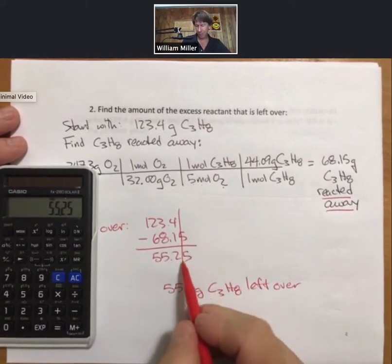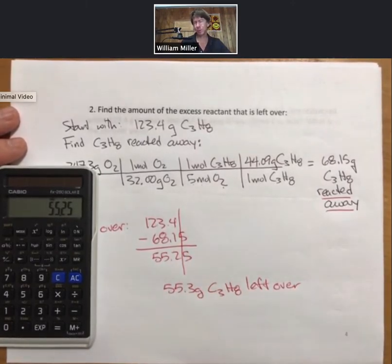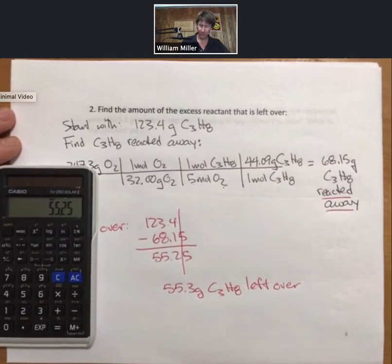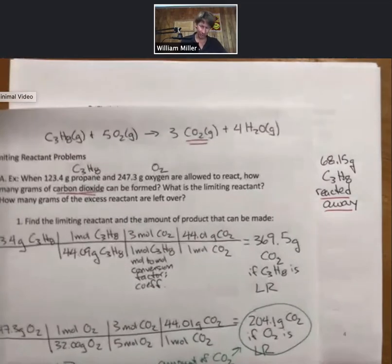But if we stack them up, we'll see that the smallest number of decimal places for addition and subtraction is one. And so, always nice to check in with our sig fig rules. 55.3 grams of propane left over.